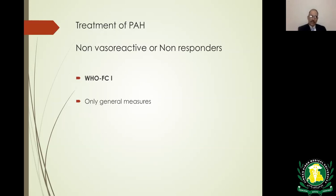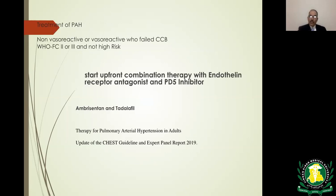If the patient is a non-vasodilator responder, all functional classes should be treated with drugs specific for PAH, except functional class 1 (asymptomatic with elevated pressure), for whom only general measures are used. For functional class 2 or 3 who are not at high risk — no pericardial effusion, no syncope — the recommendation is to start upfront combination therapy with an endothelin receptor antagonist and a PDE5 inhibitor, specifically ambrisentan and tadalafil, per the 2019 CHEST guidelines update.